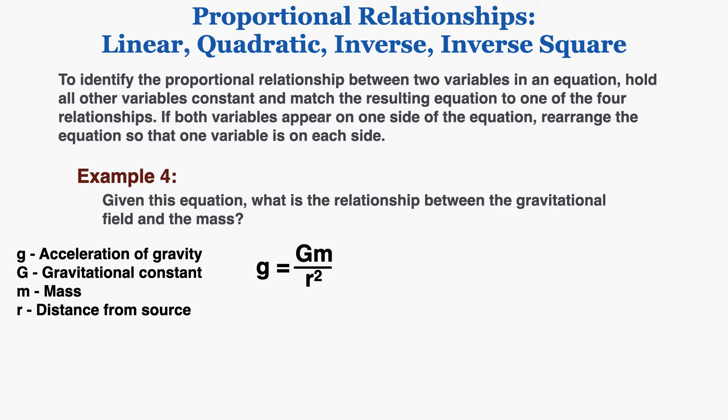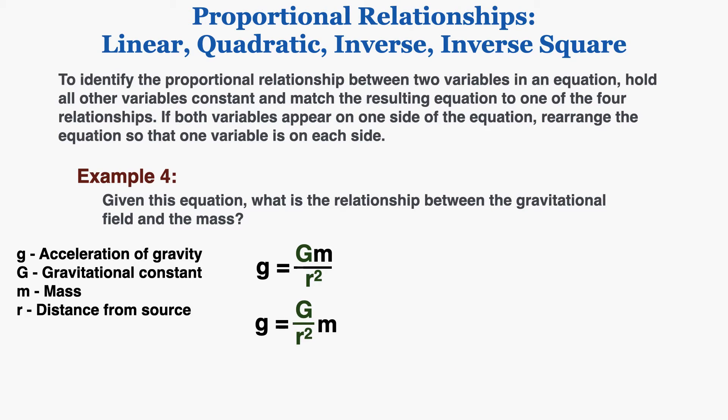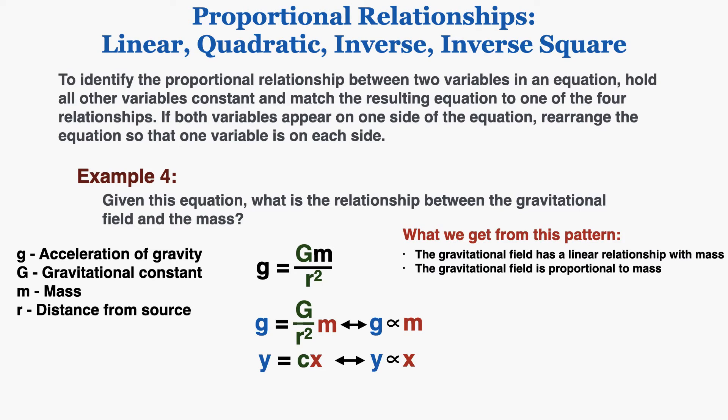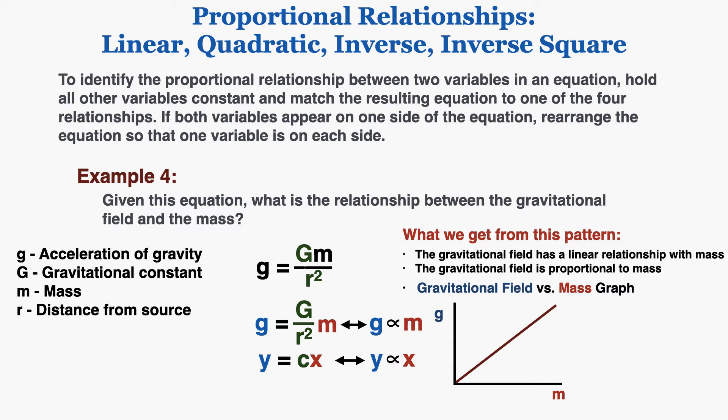Example four: given the same gravitational field equation, what is the relationship between gravitational field and mass? Holding G and r squared constant and rearranging to isolate mass, we can see that the gravitational field is proportional to mass. This tells us the gravitational field has a linear relationship with mass, and the graph of gravitational field versus mass is a straight line.